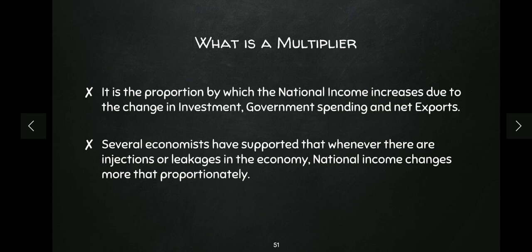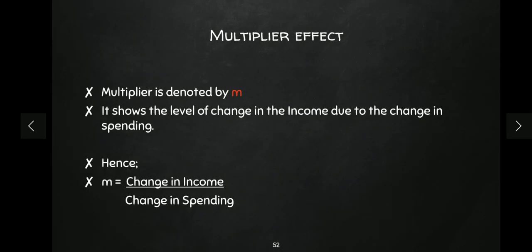For example, if I invest 100 rupees in the economy and the national income increases by 200 rupees, then the multiplier value is 2. That means whatever investment we make, our national income will double. Multiplier is basically a value that tells us what will be the change in national income if there is a change in any spending. We denote the multiplier by small m.